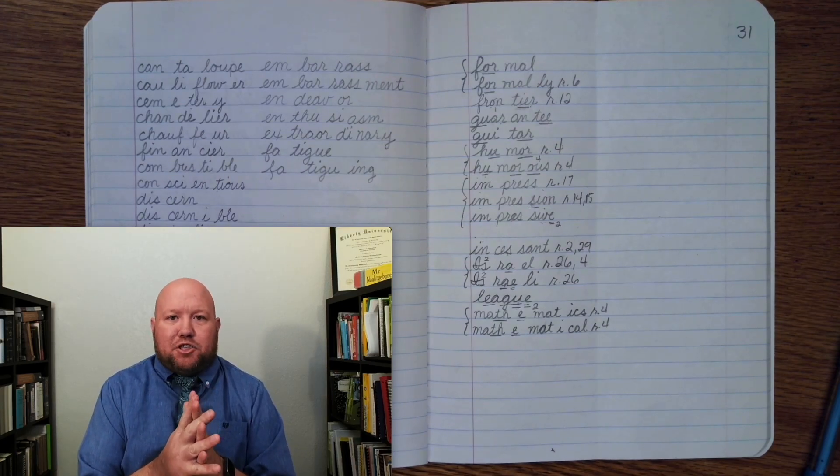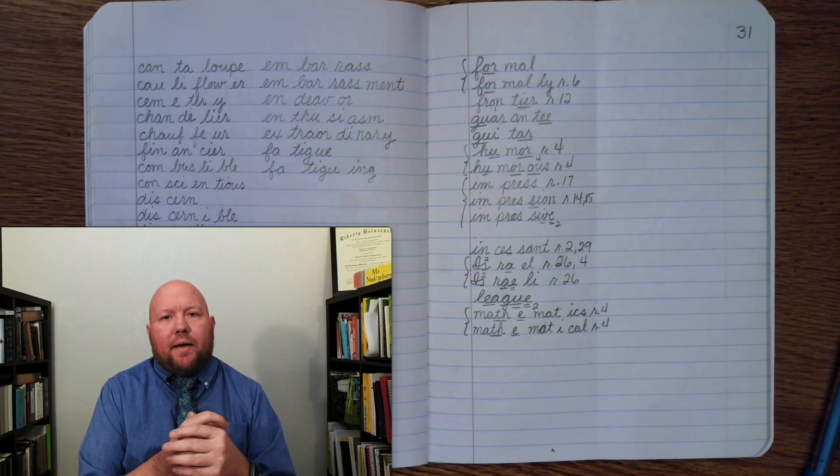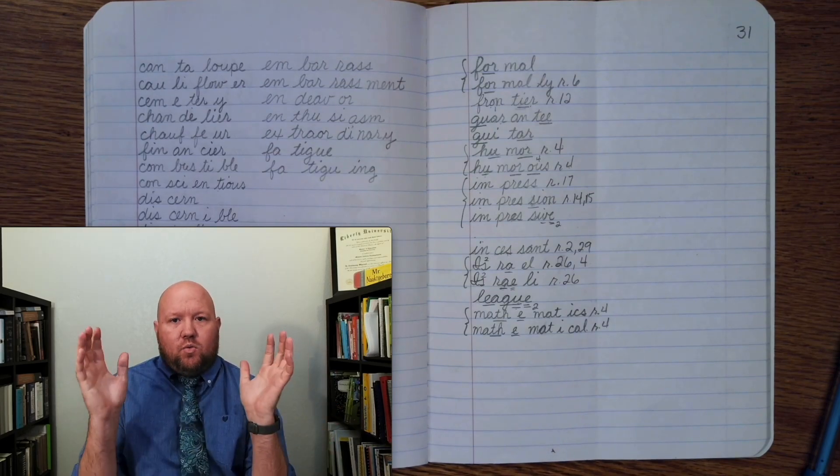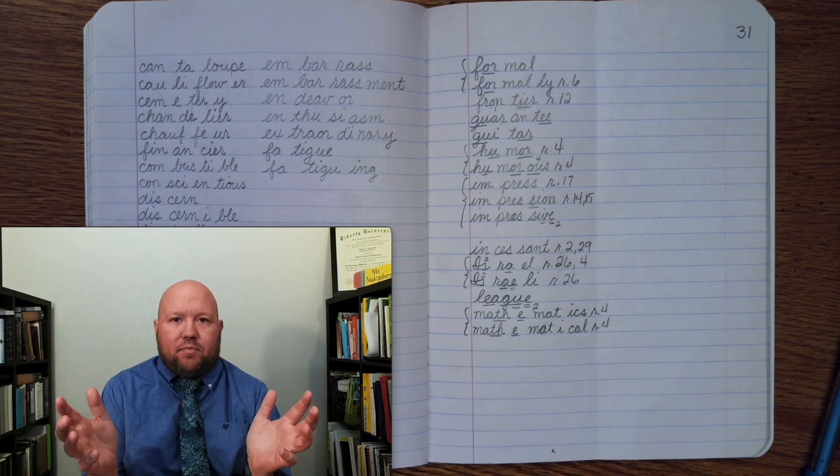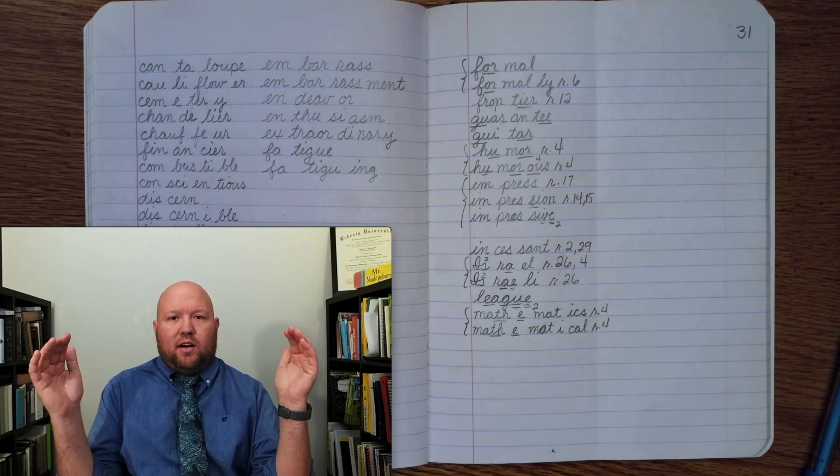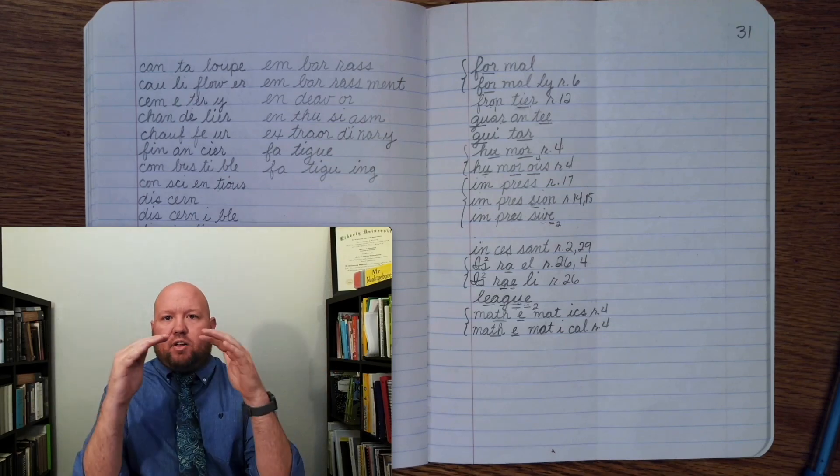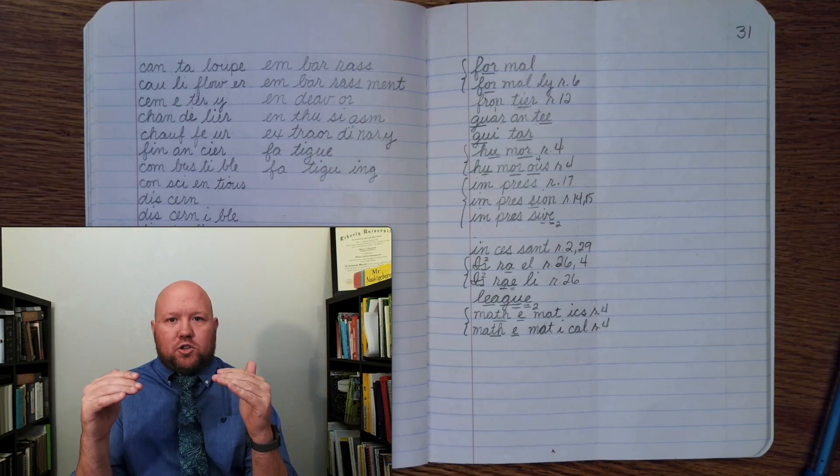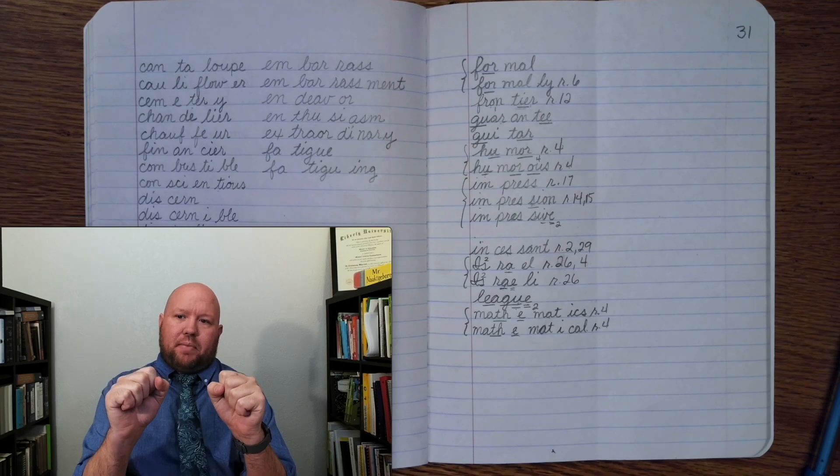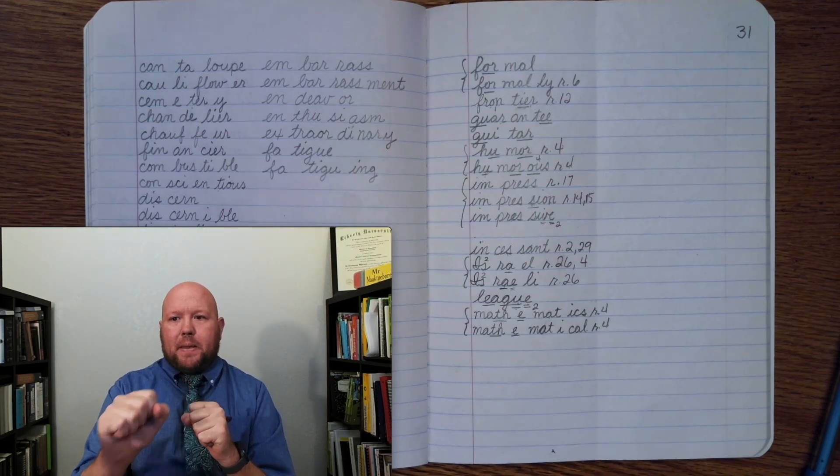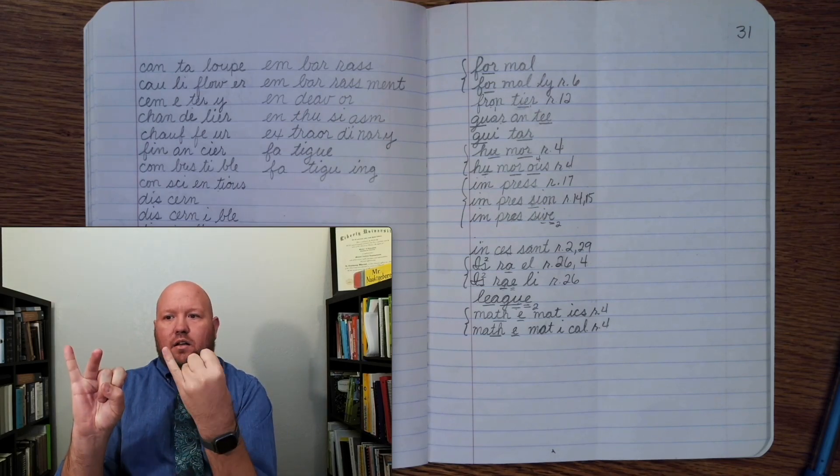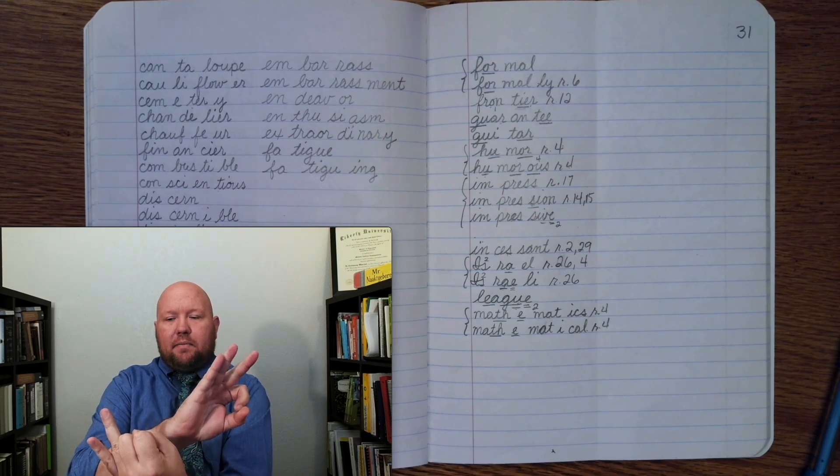The next word is militia. Now, we don't use this word a whole lot, but back when the country was founding, when the United States was founding, you wanted every colony had a militia. It was an organized group of soldiers, but they weren't part of the official soldiers of the whole country. They weren't British soldiers. They were soldiers of the colony and eventually the state. Militia. Militia. Militia. Base word. Militia.